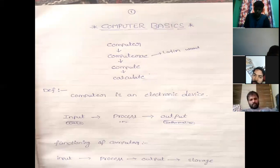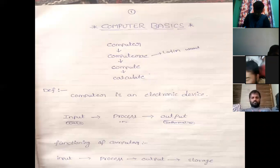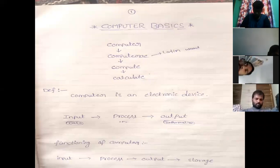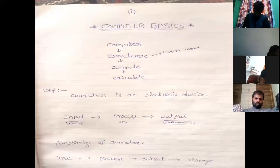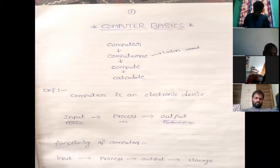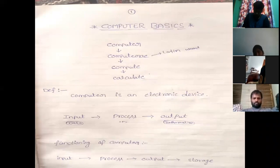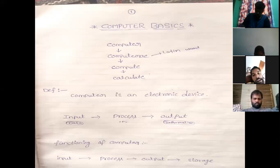What is a computer and what is the use of a computer? What is the definition of a computer? A computer is an electronic device used to store and process data.